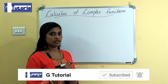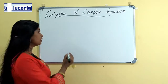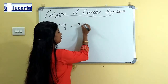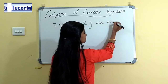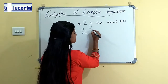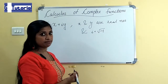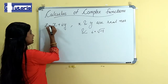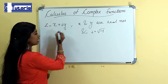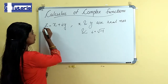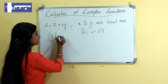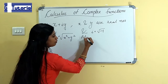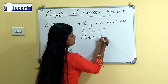Let us start with the basics. What is a complex number? A number denoted as X plus iY, where X and Y are real numbers and i is equal to the square root of minus 1, is called a complex number. The complex number can be denoted using any letter. Let us take Z as a complex number given by X plus iY. Then the modulus of the complex number is denoted as mod Z and it is equal to root of X squared plus Y squared. This is called the modulus of the complex number.